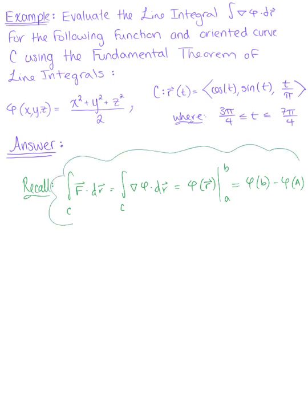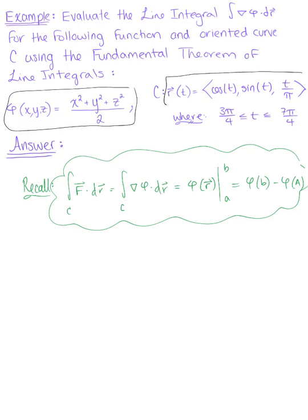So looking at what we're given here, we already have our potential function φ. We just need to reparametrize it in terms of vector r of t.